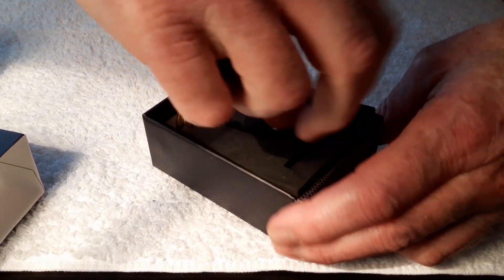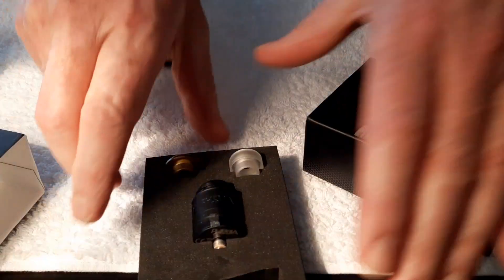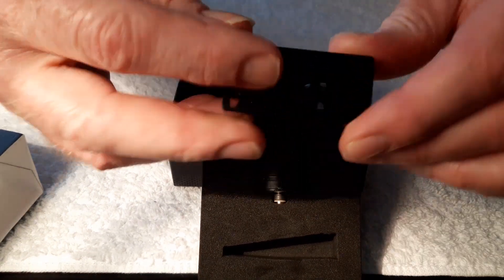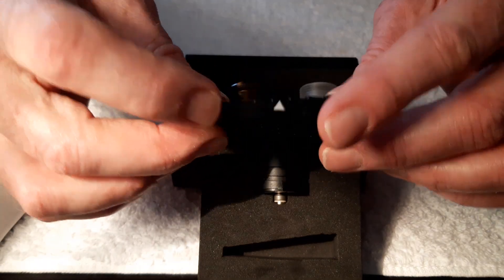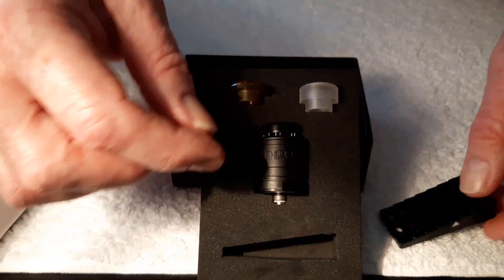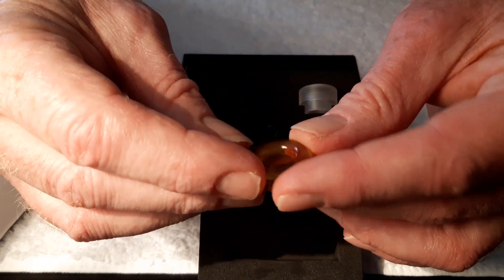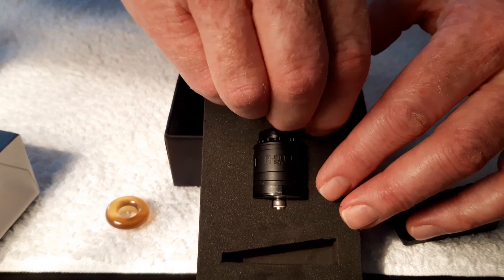There we go. Now you have seen it as much as I have. Little coil cutting jig for the Phobia. There's one drip tip, nice, I like that one.